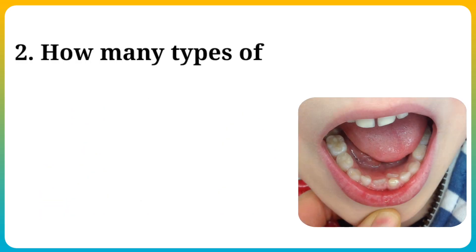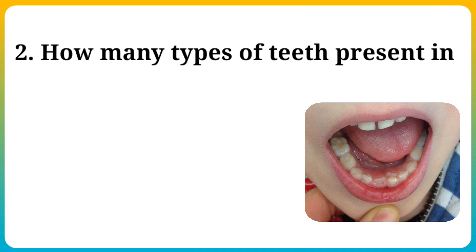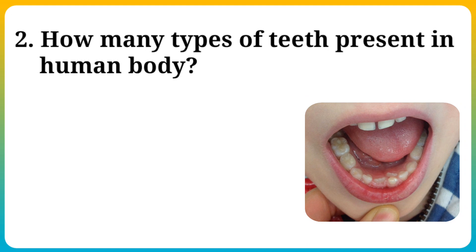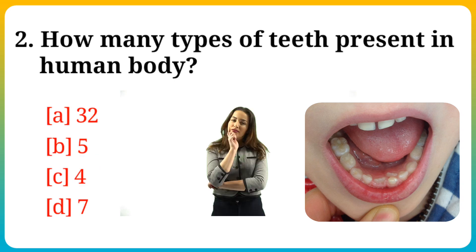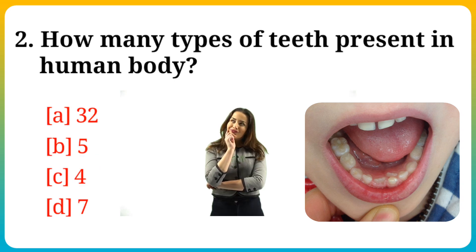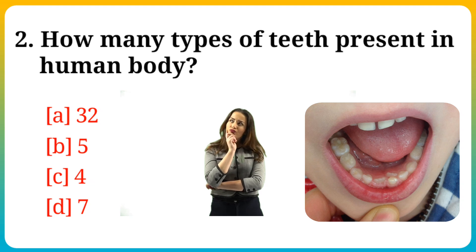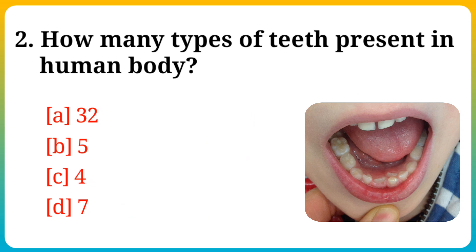Question number 2. How many types of teeth are present in the human body? Option A: 32, B: 5, C: 4, D: 7. Answer is option C: 4.